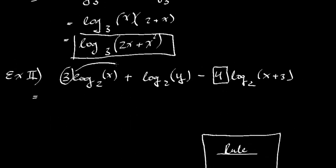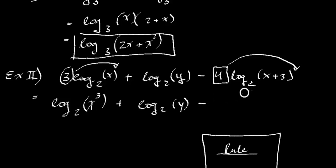So we are going to do that. So this one, the 3 is going to go up here. The 4 is going to go up here. So we got log 2, x to the 3rd power. Plus log base 2, y. And you may have a different way of doing this, but I recommend you do that first so you can see what you are working with. And then you put the 4 up there to the 4th power.